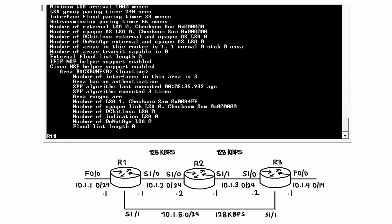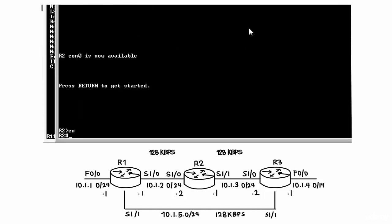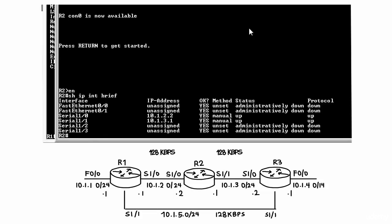Now let's enable OSPF on Router 2 and observe how the output changes. On Router 2, 'show IP interface brief' will display the interfaces configured on that router.